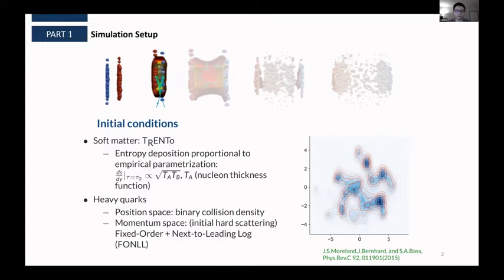For the initial conditions, specifically for the soft matter part, we used a model called Trento, which deposits entropy proportional to empirical parameterization. So here you can see it's proportional to the square root of Ta and Tb, which are the nucleon thickness functions. But actually, in the original form of Trento, it proposed a parameterization that is a generalized mean of Ta and Tb.